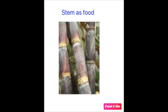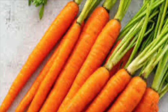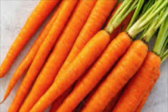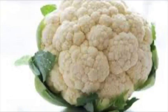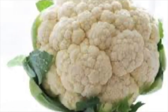Let's take a few examples. In sugarcane, starch is stored in the stem. In carrots, starch is stored in the root. In cauliflower, it is stored in the flower. In paddy and wheat, the starch is stored as seeds.